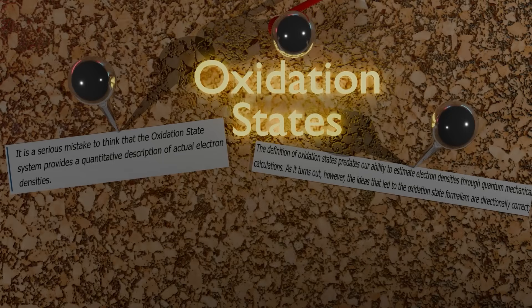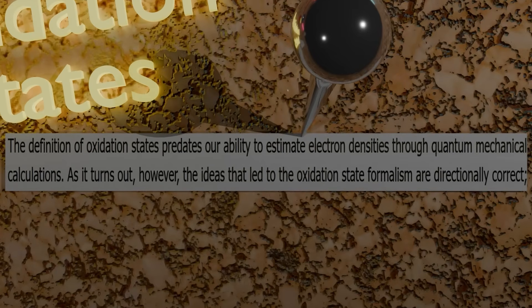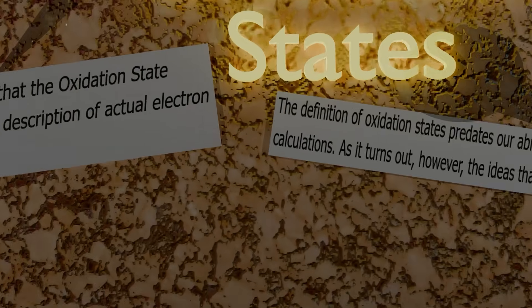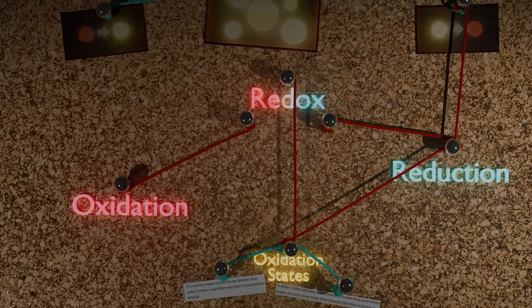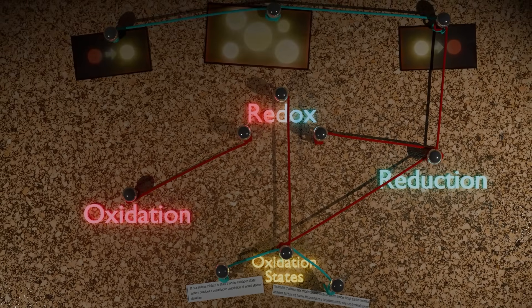As a starter, this paragraph from Libretexts states that the definition of oxidation states predates our ability to estimate electron densities through quantum mechanical calculations. And also, it is a serious mistake to think that the oxidation state system provides a quantitative description of actual electron densities — which is a great line. But the basic idea is simple: oxidation states tell you how an element should behave in a bond — basically, how many electrons it would gain or lose if a specific bond was broken.